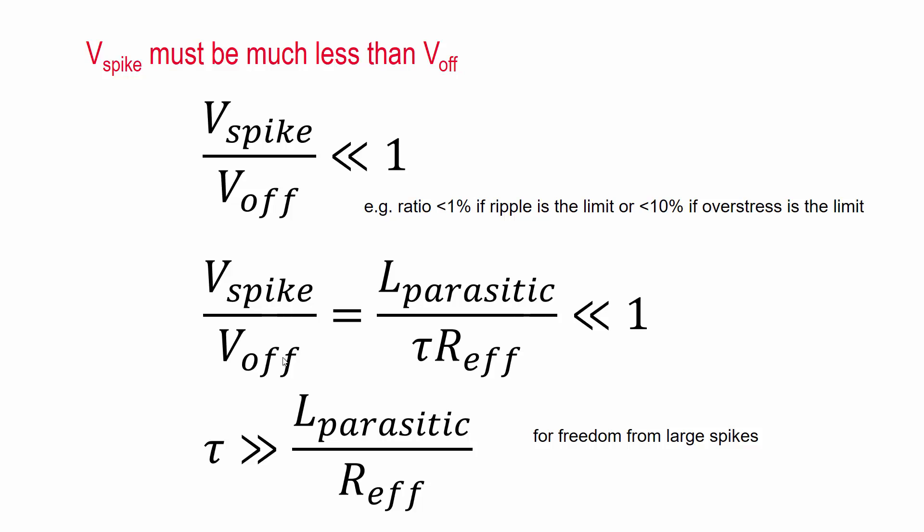And because V_spike over V_off is equal to L_parasitic over τ R_effective, that implies that this quantity also must be less than 1 because these two quantities are equal.